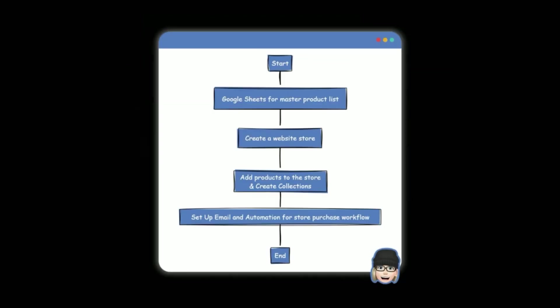We're going to start by showing you how we organized our Google Sheets with our master product list, how we created a website store, added products and collections to the store, set up an unlimited access plan to get into a yearly online course — kind of a membership community deal — and then we set up email and automation for the actual store purchase and for our unlimited access purchase. We're going to go through these in detail, focusing strictly on creating a digital media product online store.